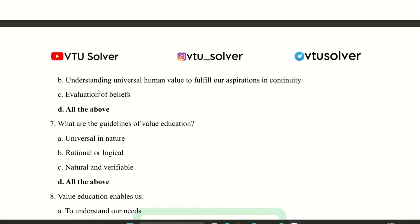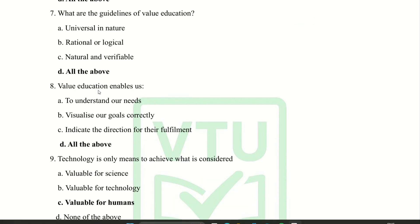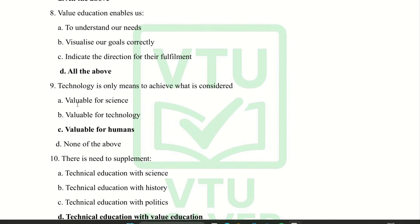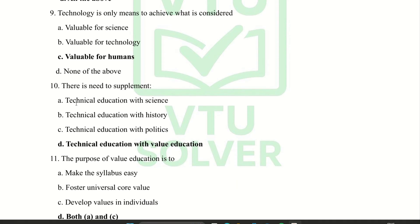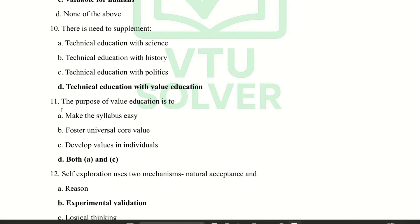Next question: what are the guidelines of value education? All of the above. Next question: value education enables us — all of the above. Ninth question: technology is only a means to achieve what is considered valuable to humans. Next question: there is a need to supplement technical education with value education.